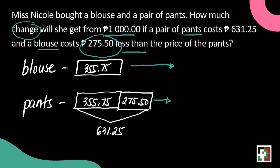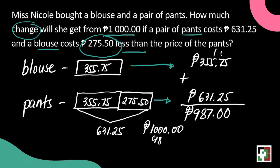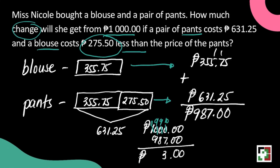Since we're looking for the change, we first get the sum of the prices of the blouse and the pants: 355 pesos and 75 centavos plus 631 pesos and 25 centavos gives us 987 pesos. We then get the change by subtracting from 1,000 pesos and we get 13 pesos. That will be the change of Ms. Nicole after paying 1,000 pesos.